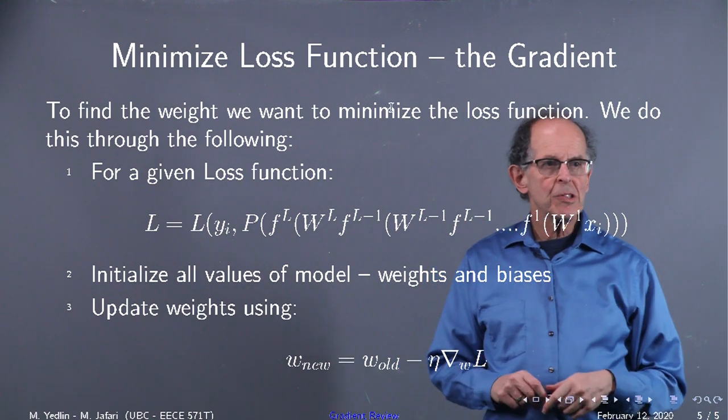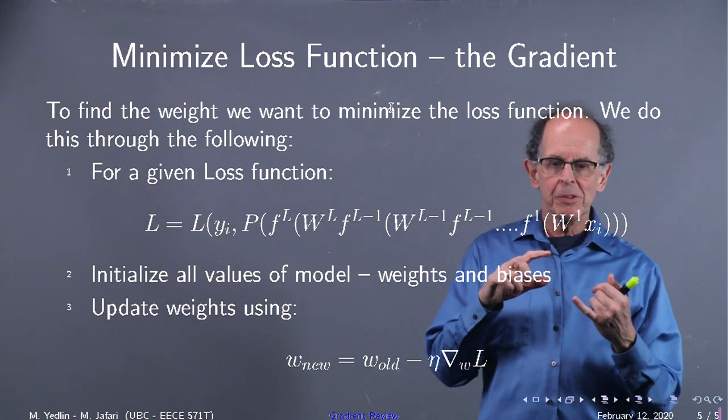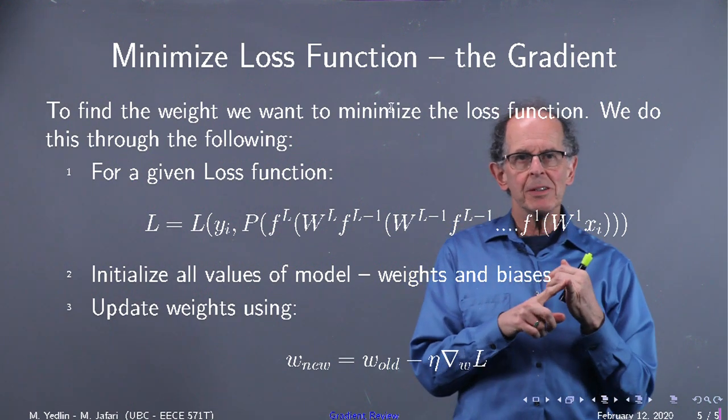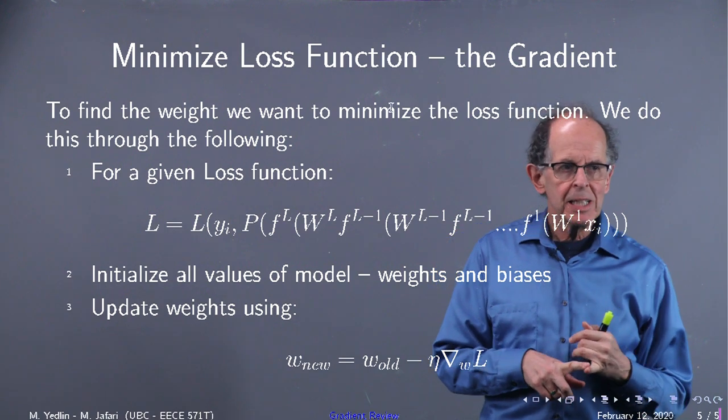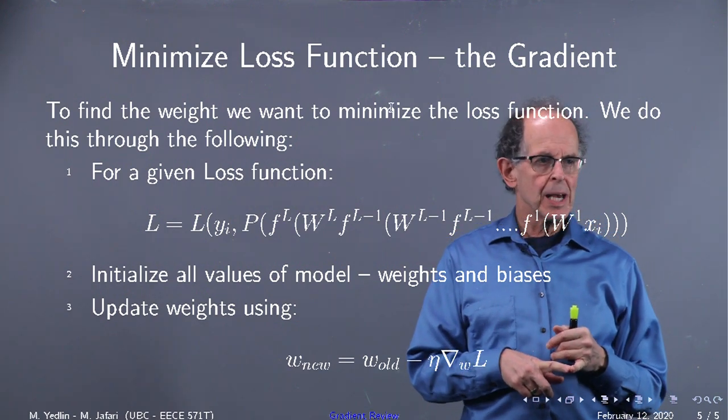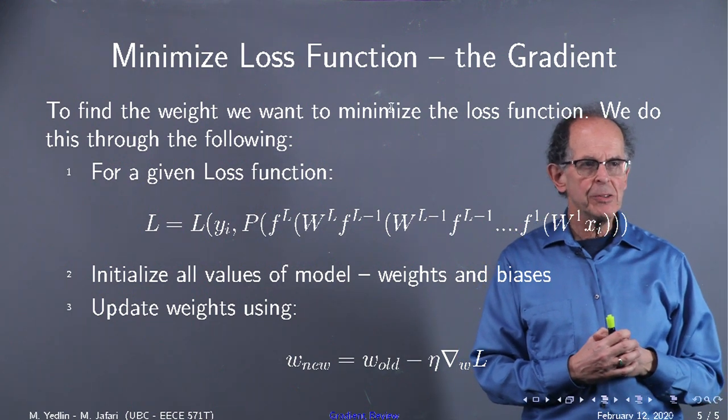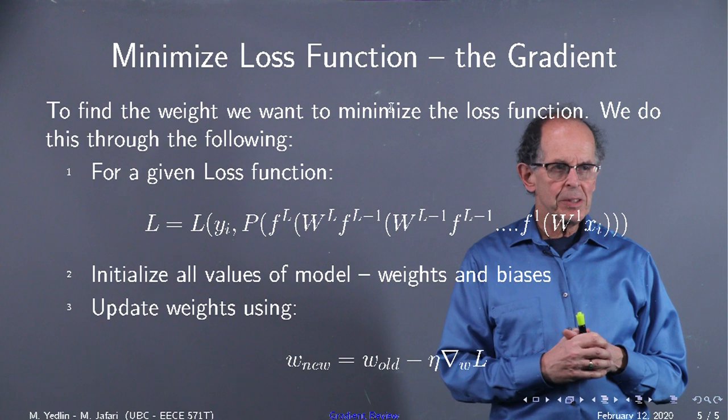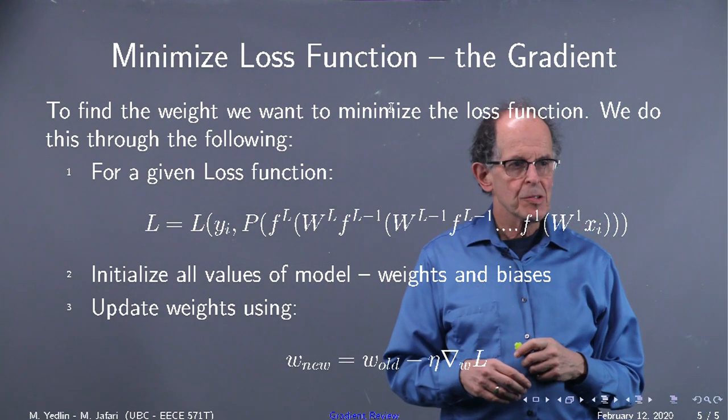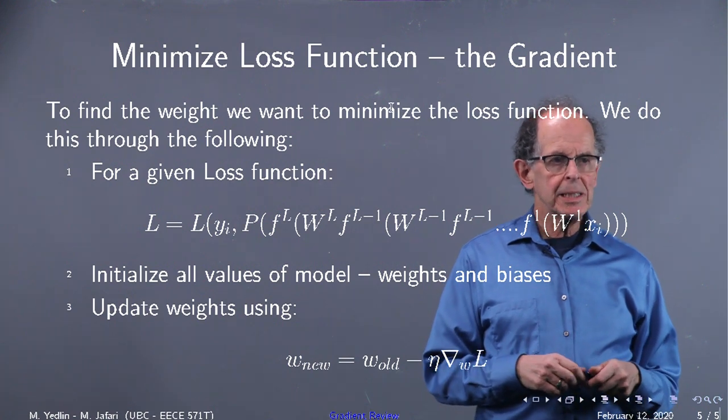So to do this minimization, and there's our loss function again, we have to find initial values for our model and then start training the model and updating the weights and biases. And as we saw before, the update equation is given below. The new weights are the old weights minus some learning rate eta that we will specify times the gradient.